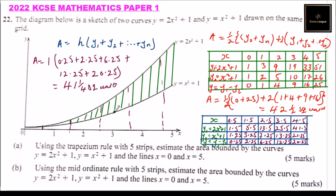So that's how you get the area. You can see the difference: when you use the mid-ordinate rule, it is more accurate than when you use the trapezium rule. This question carries five marks for Part A and five marks for Part B.